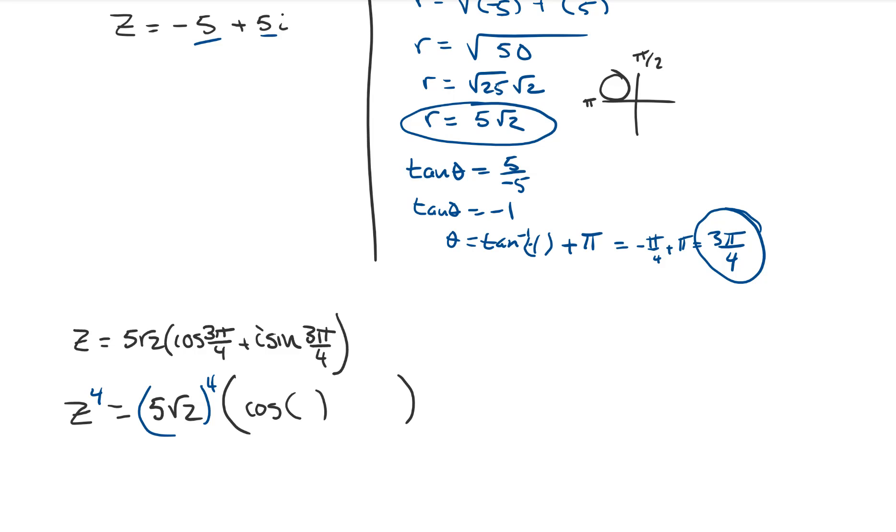Now we're going to say cosine of, I should give myself a little bit more space, plus i sine of, and let's go four times our angle which is 3 pi over 4, and 3 pi over 4. Good news, when we look at this thing, we're going to see that those fours are just going to go away.